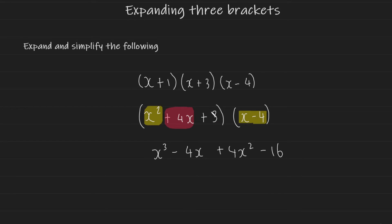And finally, I'm going to do the same thing for the plus 3 in the left bracket. So it's going to be plus 3 multiplied by x, which gives us plus 3x, and plus 3 multiplied by negative 4, which gives us negative 12.